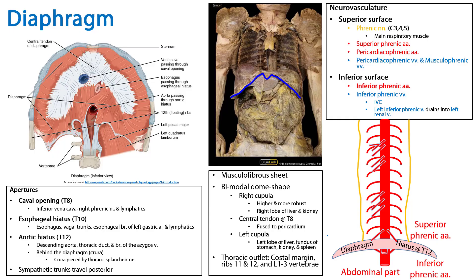So we've discussed the structure of the diaphragm and its various apertures — the caval opening, the esophageal hiatus, and the aortic hiatus — and their contents. We've also discussed the neurovascular supply of the diaphragm, including the phrenic nerves and the inferior phrenic arteries among other vessels. This is your summary slide. Thank you very much for your time.